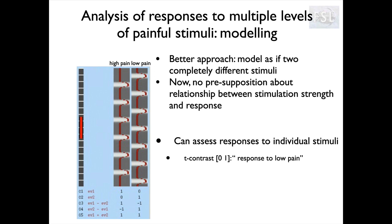By setting up our design matrix this way we can then ask different questions. With two different EVs we can formulate a range of contrasts. One is a zero-one contrast, putting zero on EV1 (high pain) and plus one on EV2 (low pain), which asks: when do we see an activation or response during the low pain stimuli greater than rest?